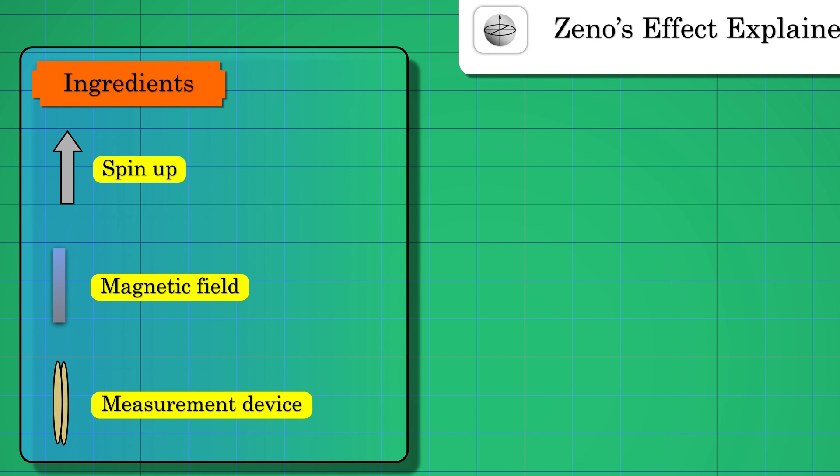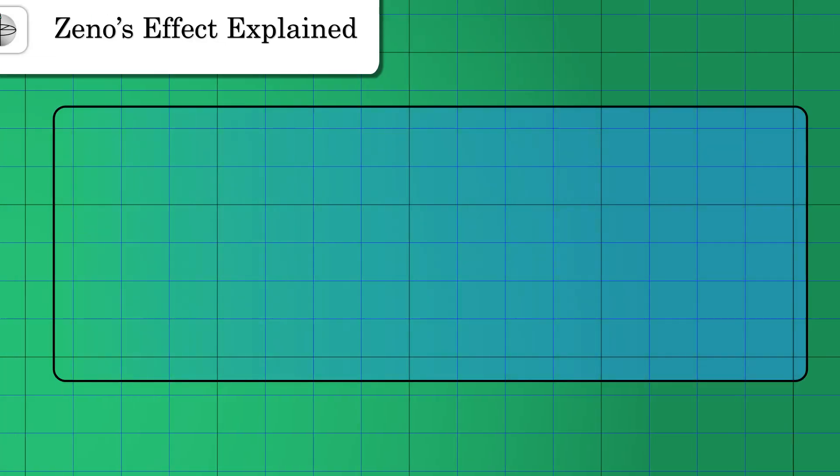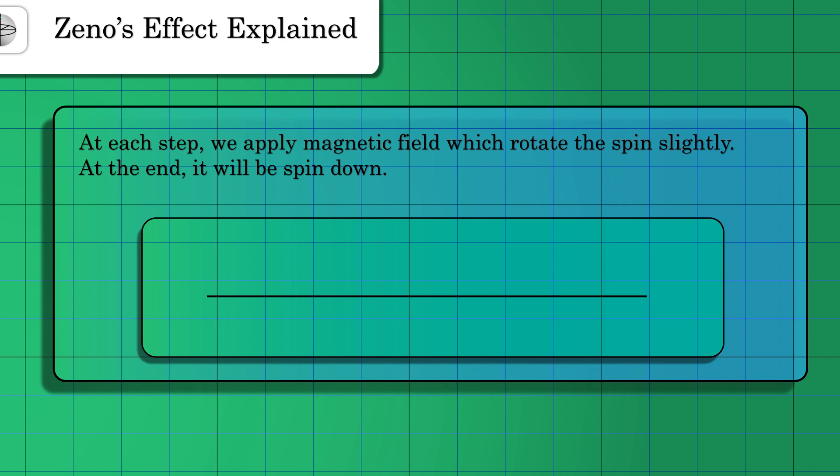The magnetic field will slightly rotate our qubit. After a large number of steps, the qubit will spin down. This is a routine exercise scientists do in their lab.